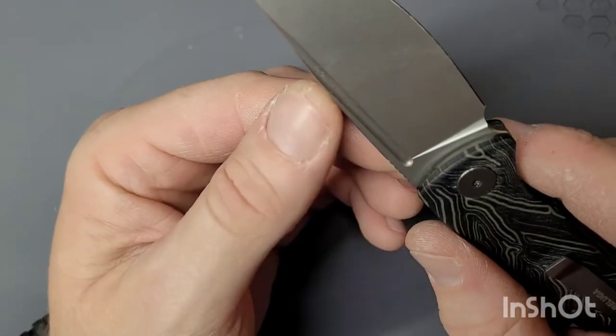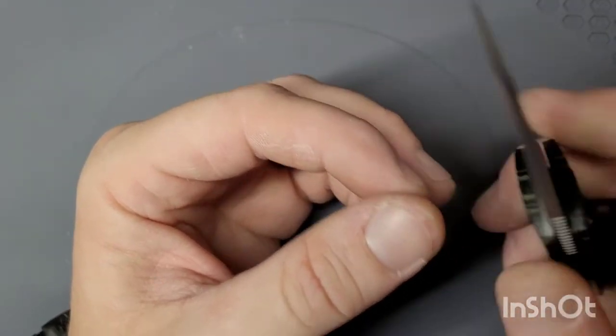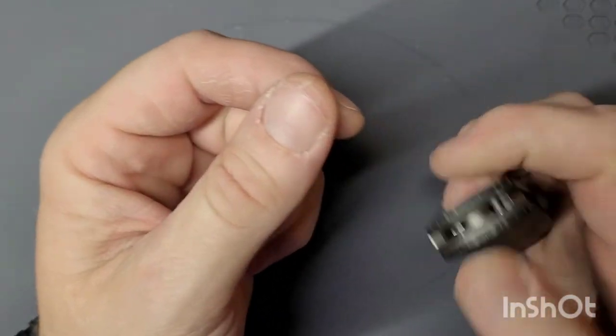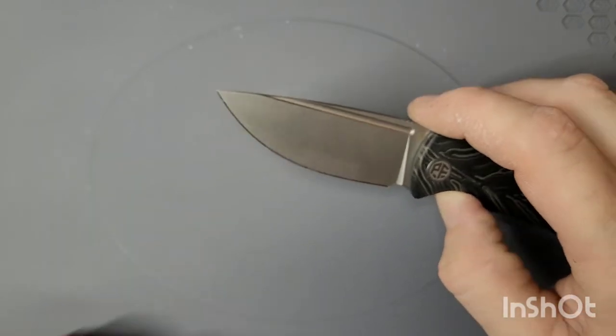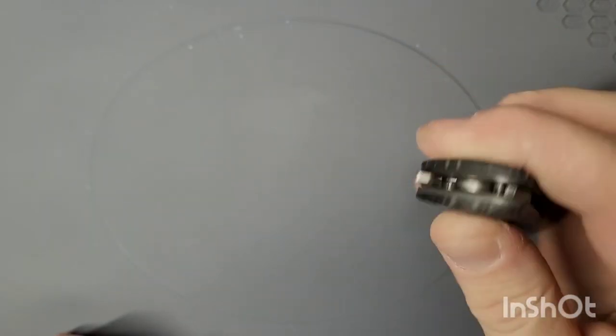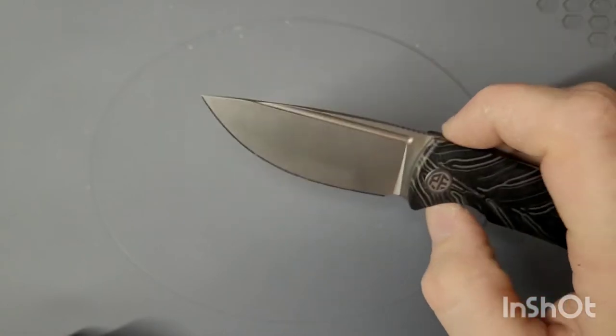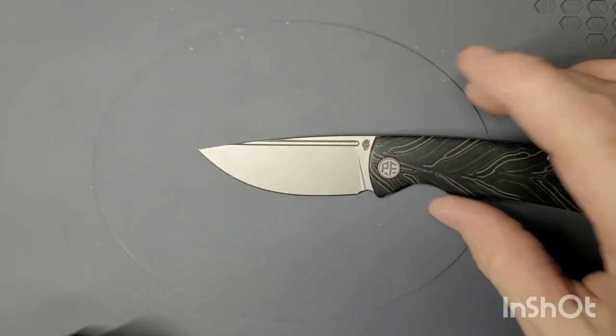Blade steel on this one is 14C28N. On the bigger one it's K110, which from what I understand is basically D2. Which is why I went with the 14C28N version, because I prefer it as a steel.